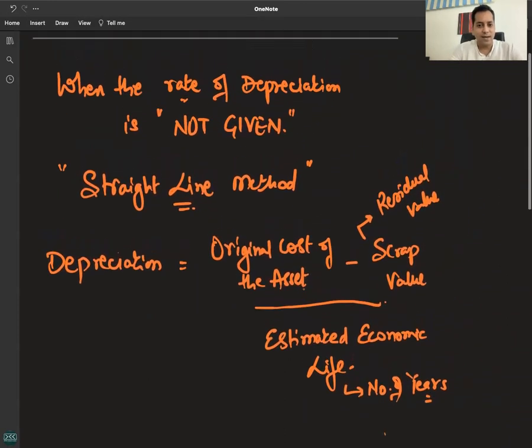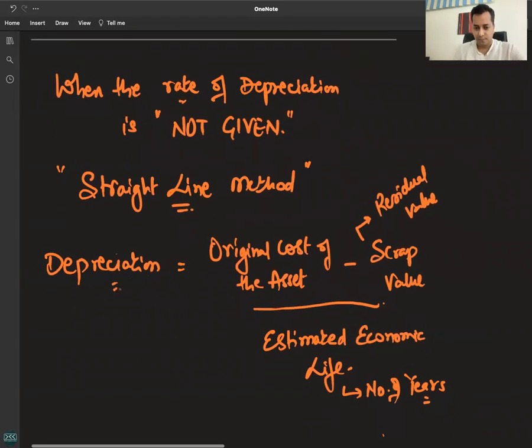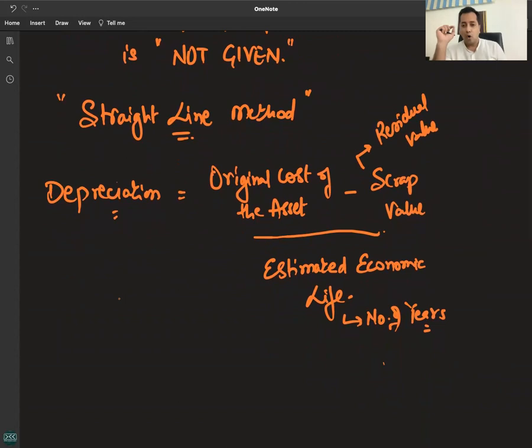When depreciation rate is not given, depreciation is equal to original cost of the asset. It will include any expense incurred to bring the asset into its working condition, which will be added to the cost of the asset. Original cost minus scrap value divided by estimated economic life.